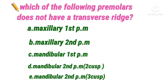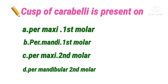Please watch the previous two videos on anatomic landmarks on tooth surface, as they will help you answer these questions easily. The next question: the cusp of Carabelli is present on — option A permanent maxillary first molar, B permanent mandibular first molar, C permanent maxillary second molar, D permanent mandibular second molar. The answer is option A, permanent maxillary first molar.